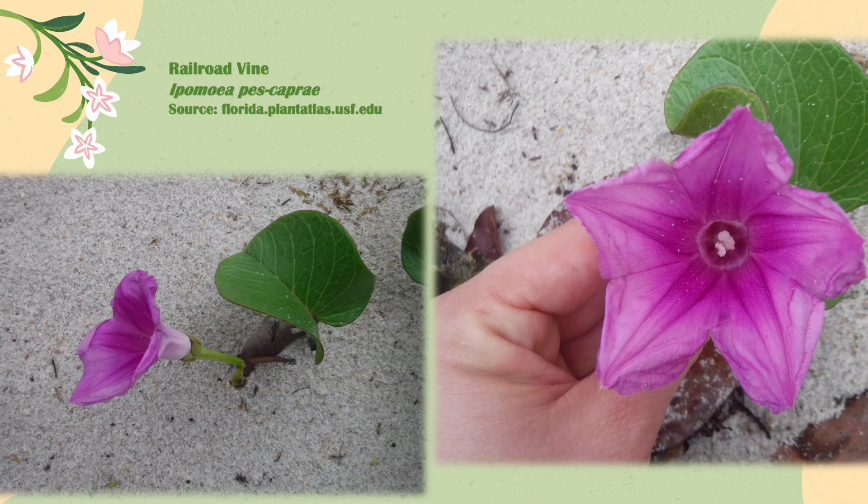This is the railroad vine, Ipomoea pes-caprae — a super beautiful plant and one of the best known examples of oceanic dispersal. This plant's seeds float and are completely unaffected by salt water in terms of germination.